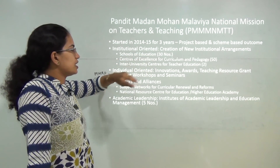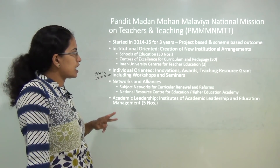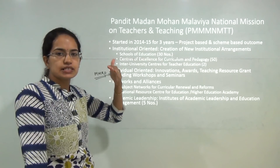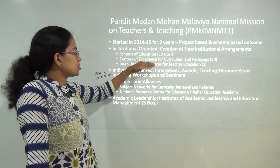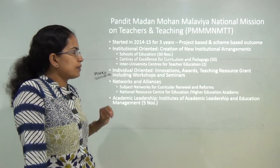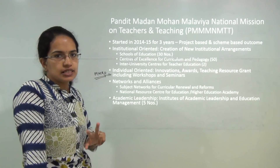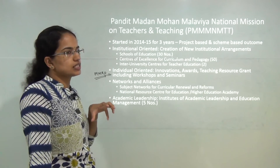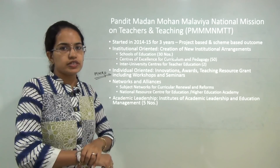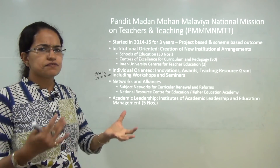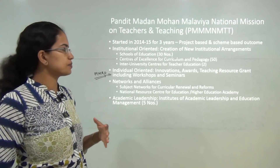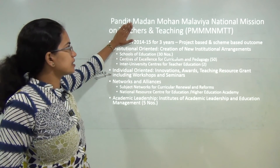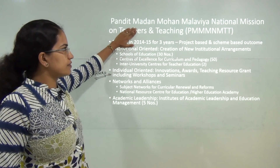For institutions there were three basic ideas given. First, there should be schools of education mainly by central universities. Then there should be centers of excellence for curriculum and pedagogy by central and state universities, and an inter-university center for teacher education. Teachers should exchange between universities, and there should be a knowledge enhancement program worked around for teachers. These were the basic ideas laid under the Madan Mohan Malaviya scheme.